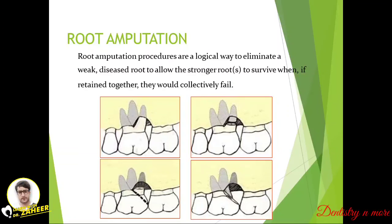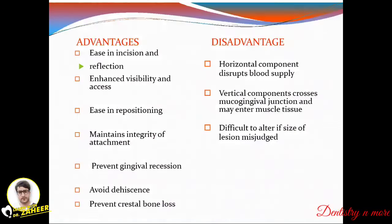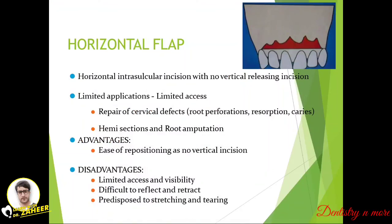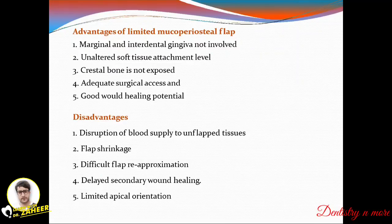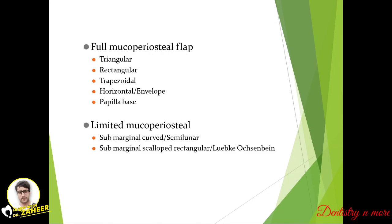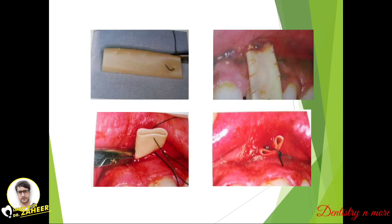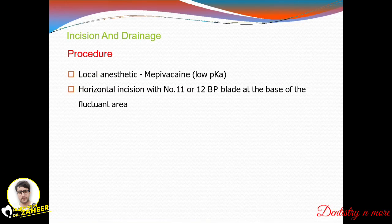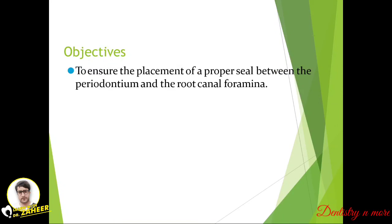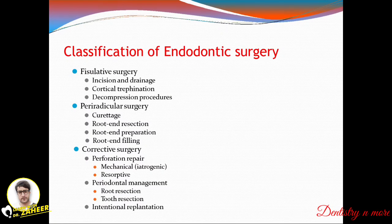To summarize, bicuspidization, hemisection, and root amputation are the most commonly asked questions, along with flap designs. The various types of mucoperiosteal flaps and limited mucoperiosteal flaps are very important. That concludes the endodontic surgery session covering only the very important questions. A new topic in endodontics will follow. Thank you.